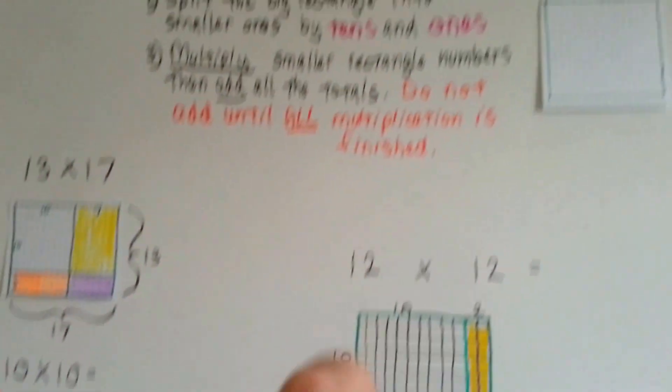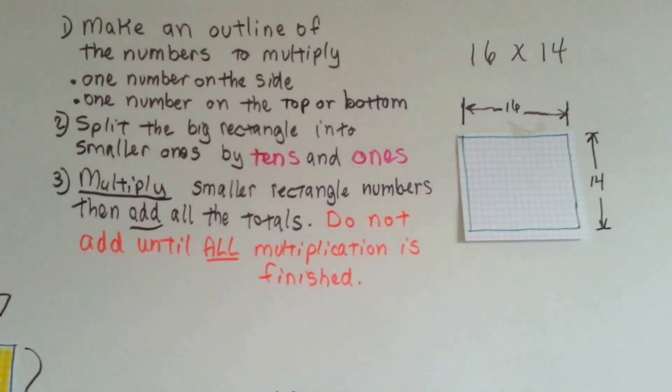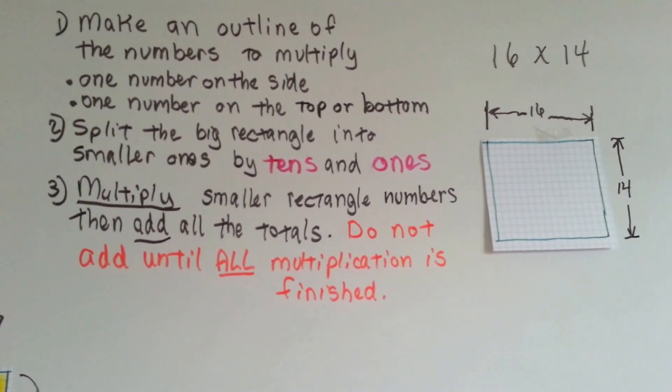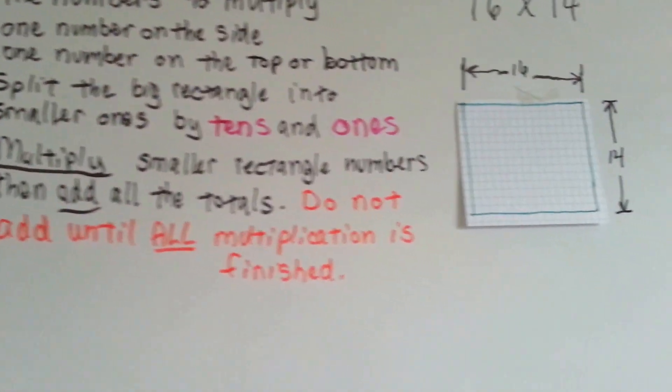Then we're going to multiply the smaller rectangle numbers, and then when we're all done multiplying, we're going to add all the totals.